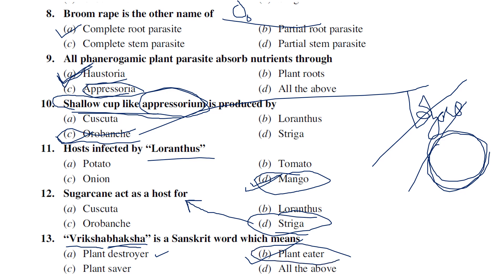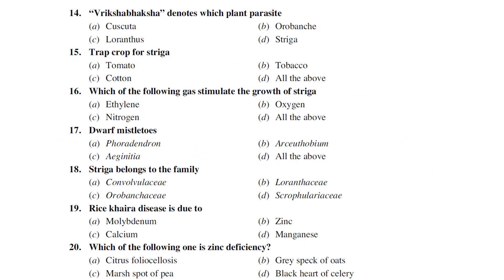Vrikshabaksha denotes which phanerogamic plant parasite? Since vriksha means plant and bhaksha means eater, this terminology is especially used for Loranthus. Loranthus infects mango and continuously draws nutrients from the infected plant parts, weakening the plant — hence Loranthus is considered a vrikshabaksha (plant eater).